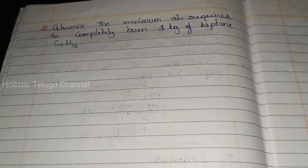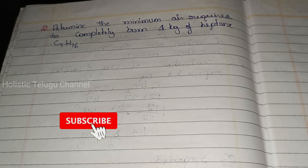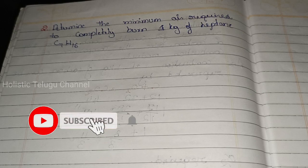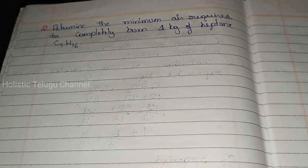We are going to have problems with HPA. The first problem is just 1 kg of complete combustion. We are going to calculate just 1 kg of combustion. The problem is to determine the minimum air required to completely burn 1 kg of Heptane C7H16.